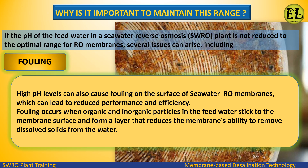Fouling: high pH levels can also cause fouling on the surface of seawater RO membranes, which can lead to reduced performance and efficiency. Fouling occurs when organic and inorganic particles in the feed water stick to the membrane surface and form a layer that reduces the membrane's ability to remove dissolved solids from the water.